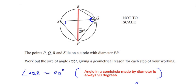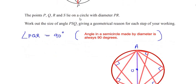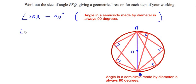Now let us find angle R, because PQR makes a triangle. Using the angle sum property, we can write: angle P plus angle Q plus angle R is equal to 180 degrees.